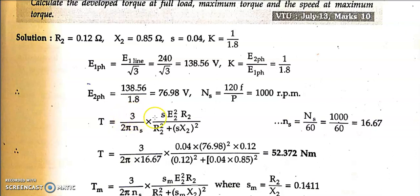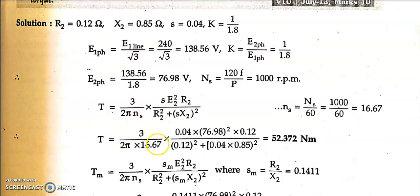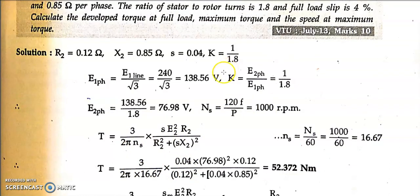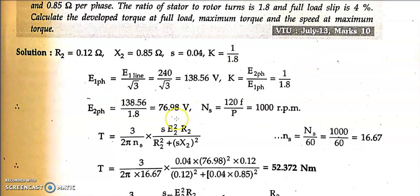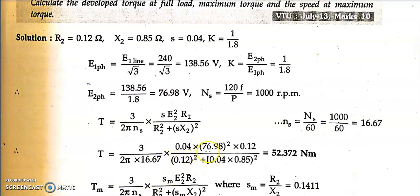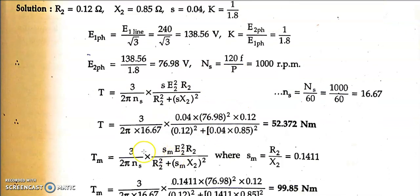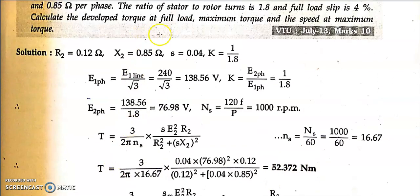The general torque formula is T = (3 / 2π·ns) × (s × e2² × r2) / (r2² + (s·x2)²). Substitute s = sfl = 0.04, e2 = 76.98 V, r2 = 0.12 ohm, x2 = 0.85 ohm, ns = 16.67 rps. The full load torque Tfl = 52.372 N·m.